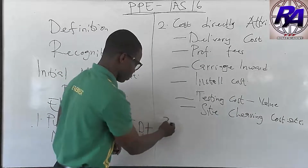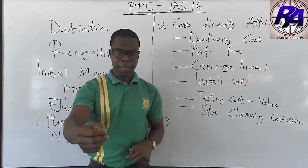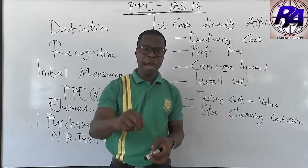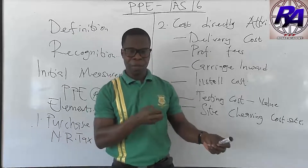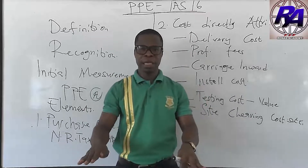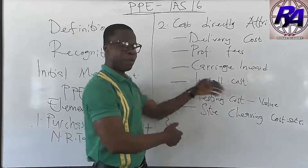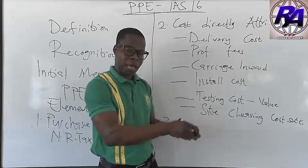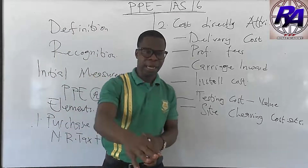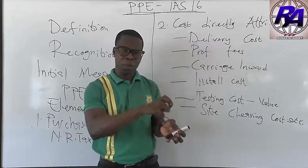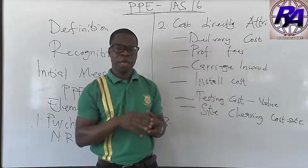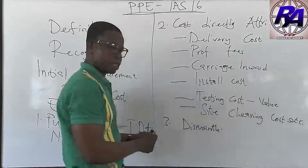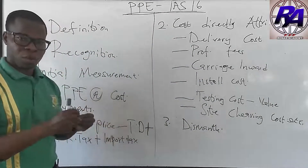The third and final category is the estimated cost of dismantling or uninstalling the asset from the premises. Sometimes it is an obligation on the entity to dismantle or remove the asset from its location when its useful life is exhausted. If there is an estimation for the decommissioning of the asset — the cost of restoring the site to its original state — that estimated cost should be capitalized as part of the cost of the asset.